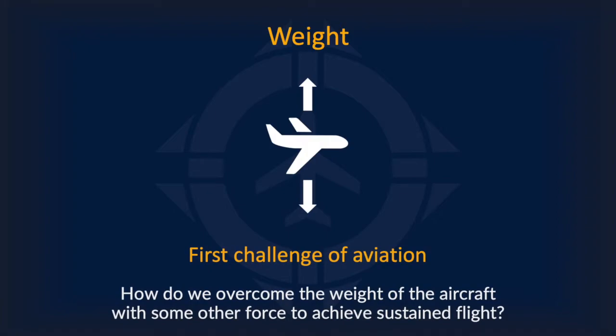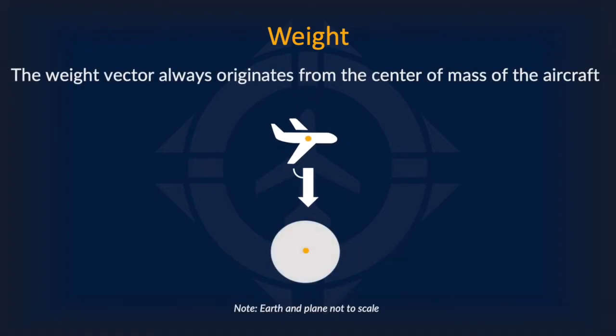Here lies one of the two biggest challenges of flight: to overcome the weight of the aircraft in some way to achieve sustained flight. In addition, the weight vector always originates from the center of mass of the aircraft — the point at which the weighted relative position of the aircraft equals zero. The center of mass also changes slightly during the course of the flight as weight at different points is moved, increased, or decreased. Thus, it is important that adjustments are made during a flight to keep the plane constantly balanced.